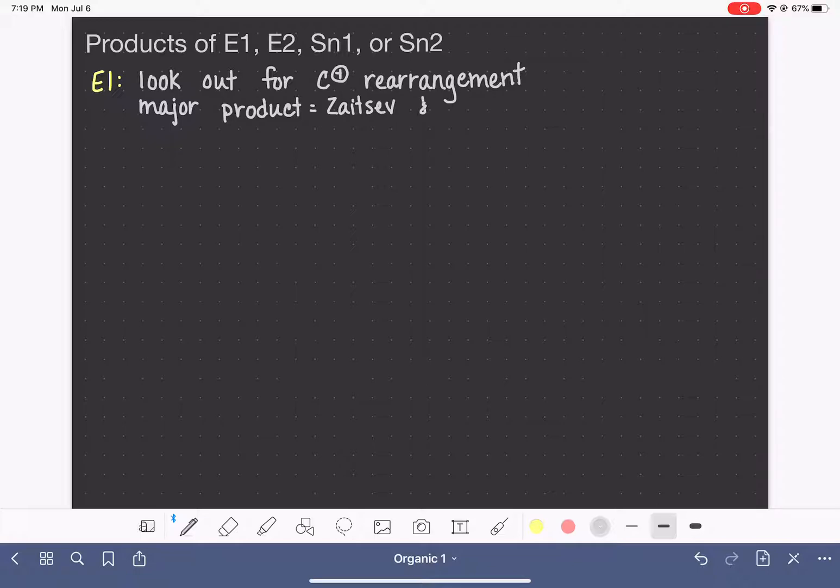And also our major product will be the trans product. So first on the importance is looking for the most substituted alkene. And then once you have found the most substituted alkene, if you can put it into a trans configuration, then that is going to be your major product. And that's really all you need to think about with E1.